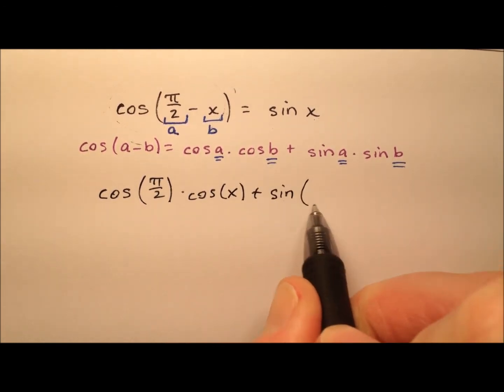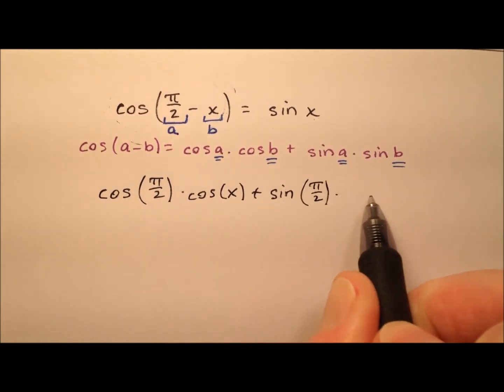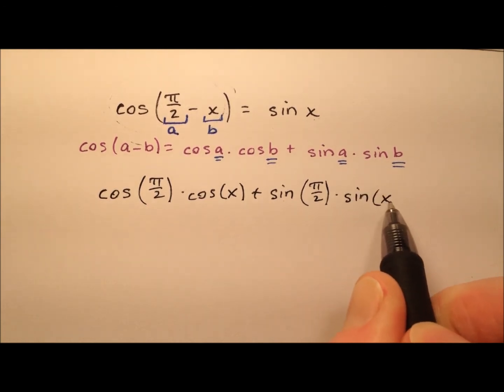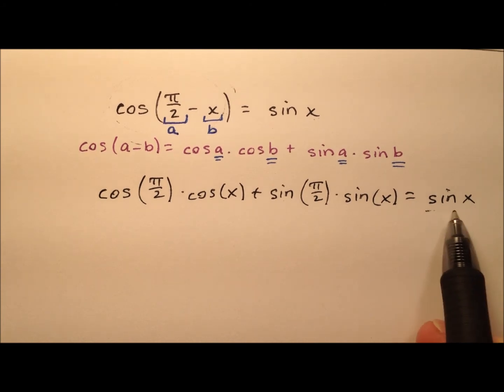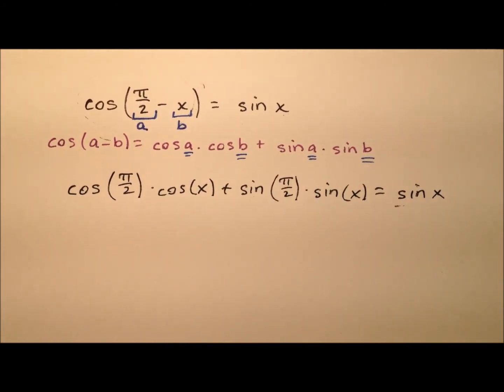plus the sine of a, which is pi over 2, times the sine of b, which is x. And that's supposed to equal the sine of x. And this right here just came from the right side here.